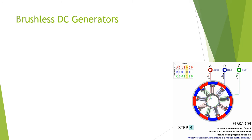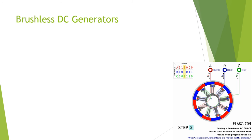A brushless DC electric motor — also called a BLDC motor, BL motor, or electronically commutated motor — has no mechanical commutator. Instead, its commutating principle is electronically controlled, and it is basically a synchronous motor.